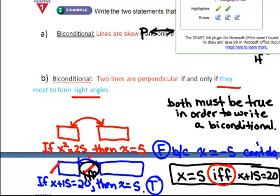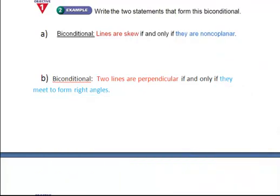Clear my ink. Alright. Example number two. Write the two statements that form this biconditional. Now, this time they're going backwards. They're giving you the biconditional. Here is the word if and only if.